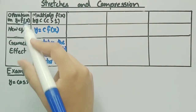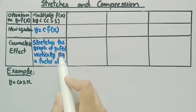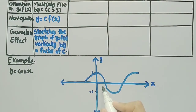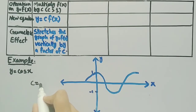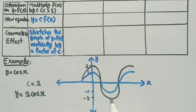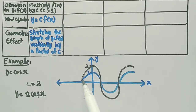The geometric effect of this operation is that it stretches the graph of y = f(x) vertically by a factor of c. Applying this to our example, here is the graph of y = cos(x). If we multiply by c = 2, the new function is y = 2cos(x). The graph in black is the graph of 2cos(x), which is stretched vertically by a factor of 2 compared to the graph of cos(x).